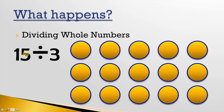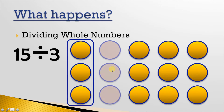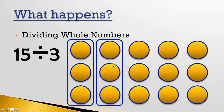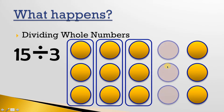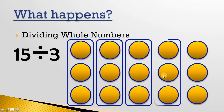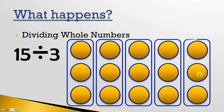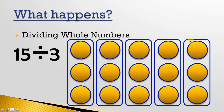So we're taking this 15 and seeing how many threes can go into it. I have a group of 3 here — that's one group of three. I have another group of three here, another group of three here, another group of three here, and another group of three here. So how many threes can go into 15? We've got one, two, three, four, five. Therefore, 15 divided by 3 equals 5.